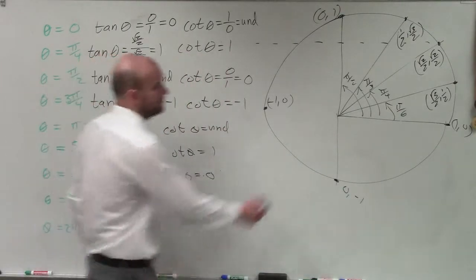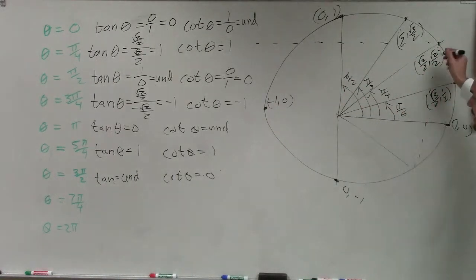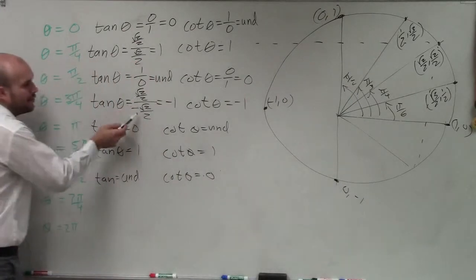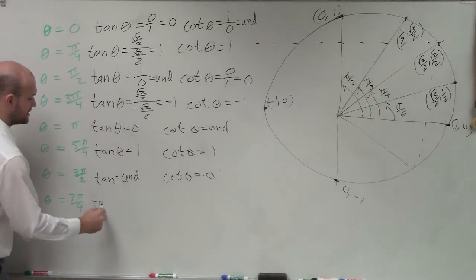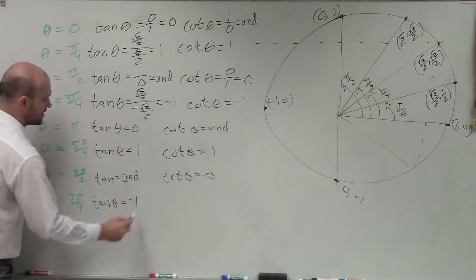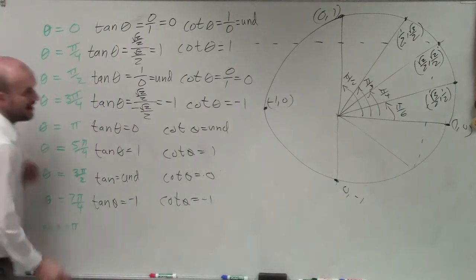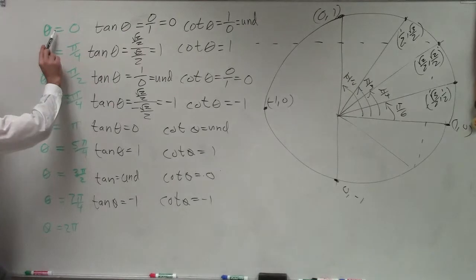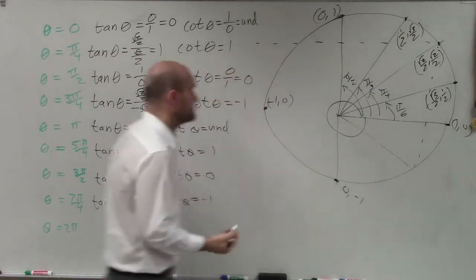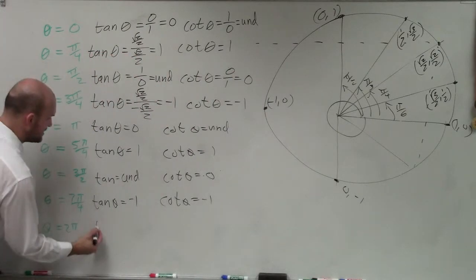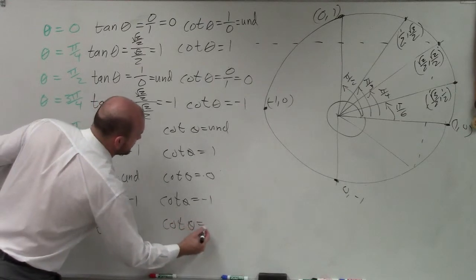For 7 pi over 4, that's a reflection into the fourth quadrant, so the y is negative. If one coordinate is negative and the other positive, the answer is going to be negative 1. So the tangent of theta equals negative 1, and the cotangent of theta also equals negative 1. For 2 pi, that's the same as 0 — a whole revolution. So the tangent of theta equals 0, and the cotangent of theta is undefined.